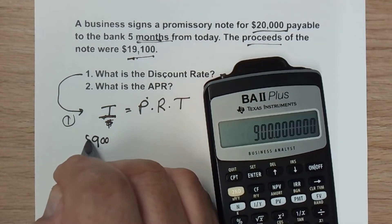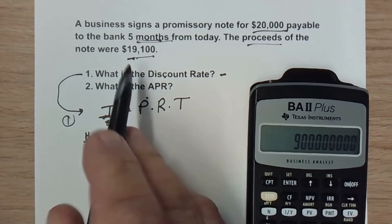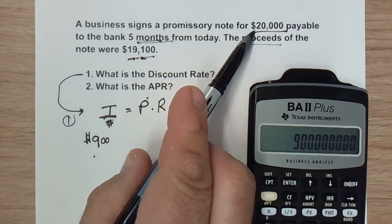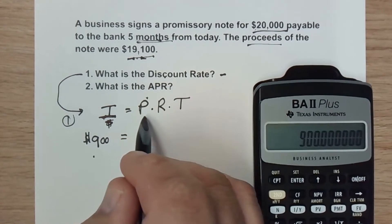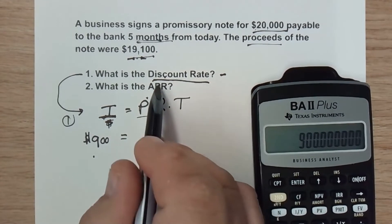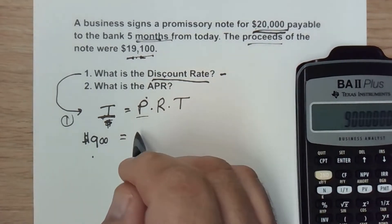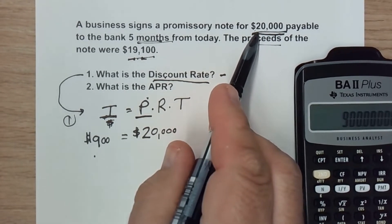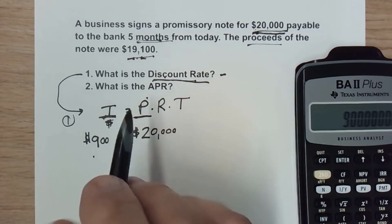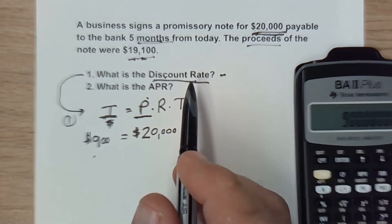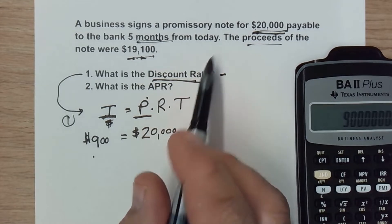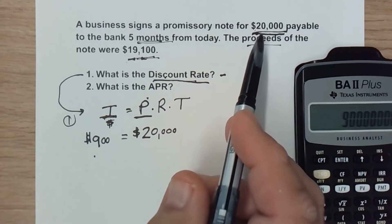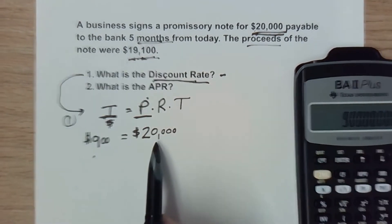The amount of interest being paid is $900 — that $900 is being tacked on to the $19,100 of proceeds when the $20,000 is repaid. Next is the principal. When figuring the discount rate, the principal is going to be the face of the note, which is $20,000 — the amount to be repaid. People get excited when they hear 'discount,' thinking they're getting something on sale, but here the bank is getting the discount: they're only lending out $19,100 and getting a $20,000 note repaid.